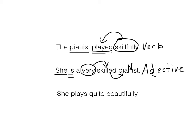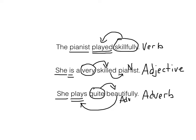In our last sentence, we have 'she plays quite beautifully.' The subject is she; plays is the verb. Quite is our adverb here — it's telling about beautifully. Beautifully describes a verb, so it is an adverb. So we've got an adverb describing an adverb here.